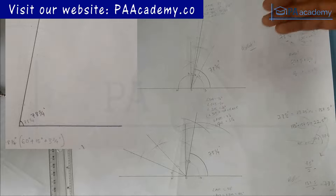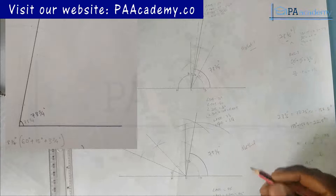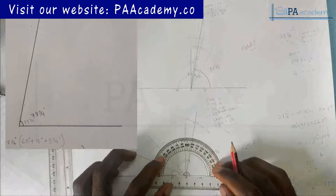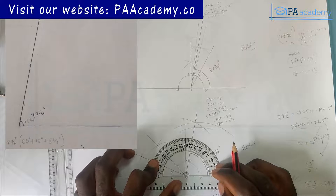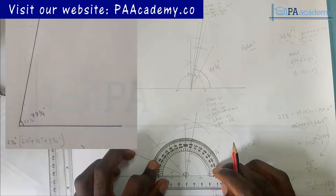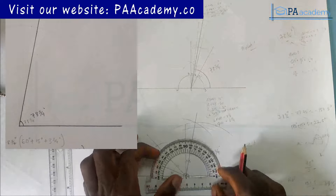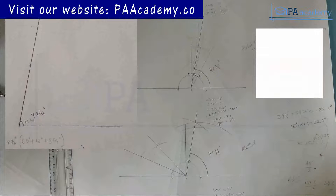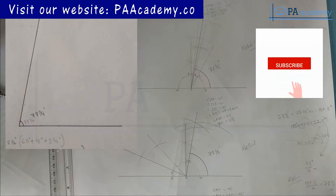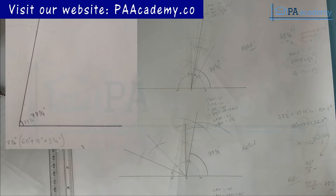Whichever method you use — method one or method two — you get the same result. You can bring in your protractor to confirm and you'll get a value very close to 79 degrees. So without a protractor you can get these angles, and that's why questions like this ask you to construct. If you find value in this video, please give it a thumbs up, subscribe to PA Academy, and check the playlist for other angles like 7.5, 52.5, and 48 three-quarter. See you in the next video — thank you.